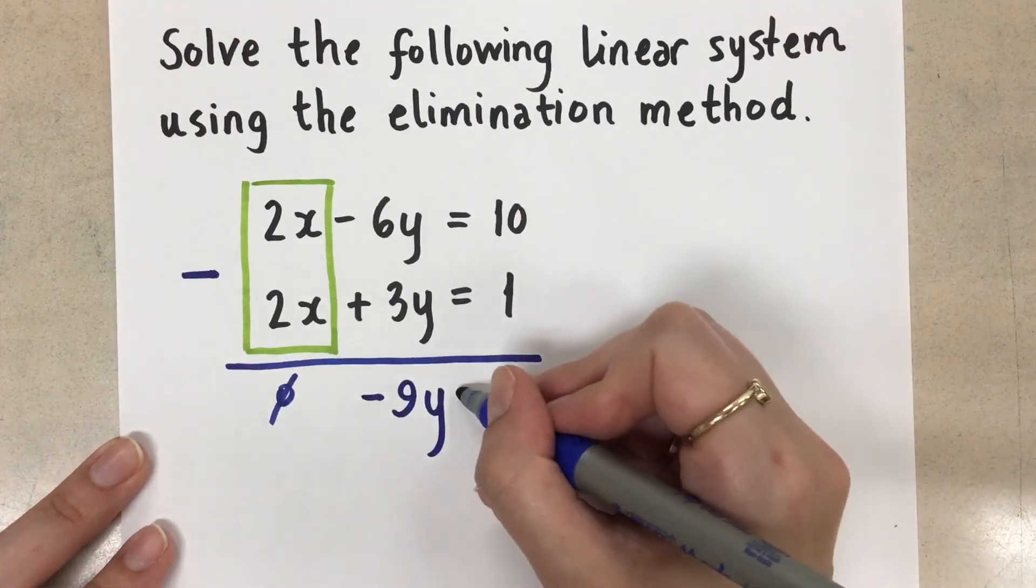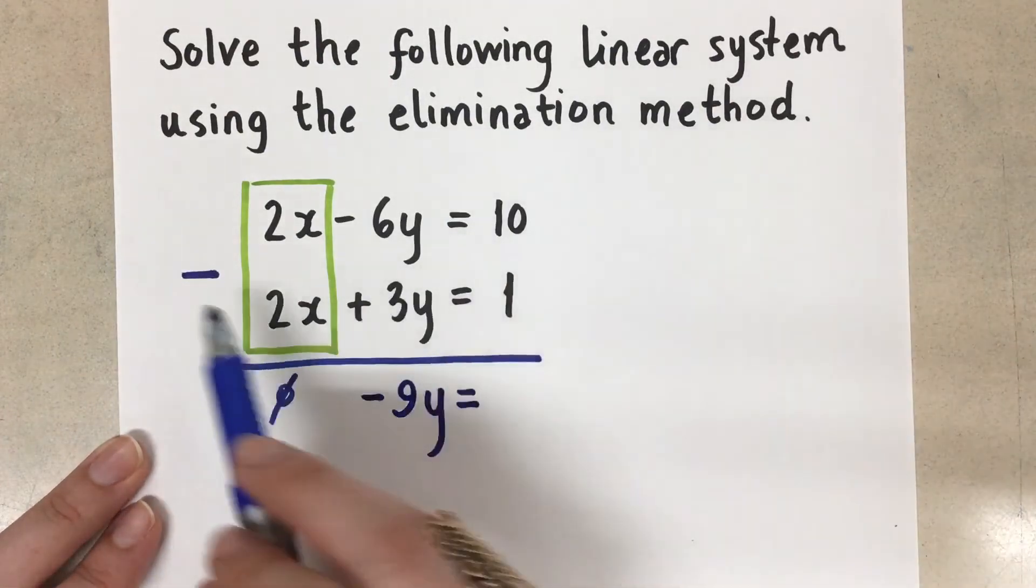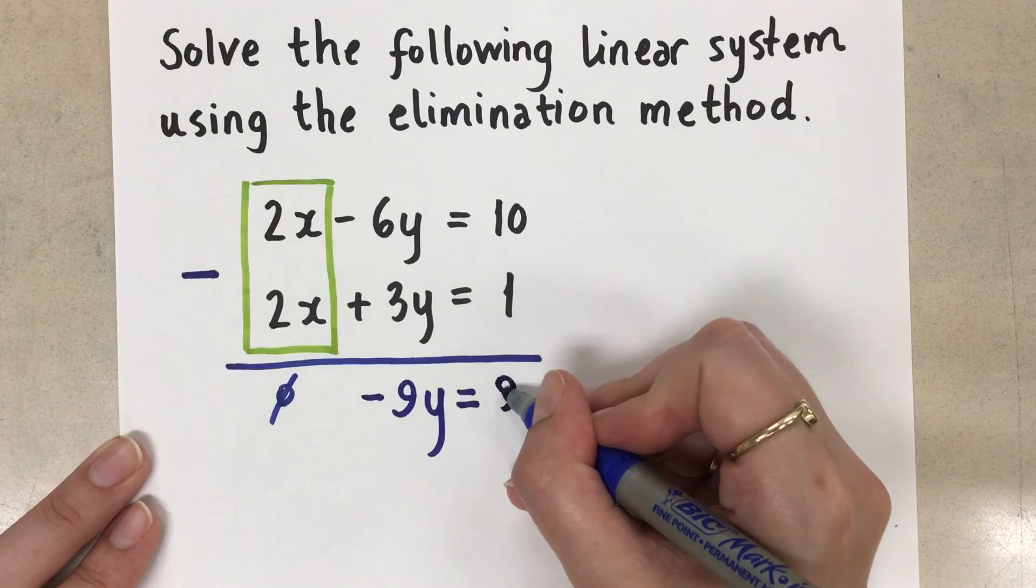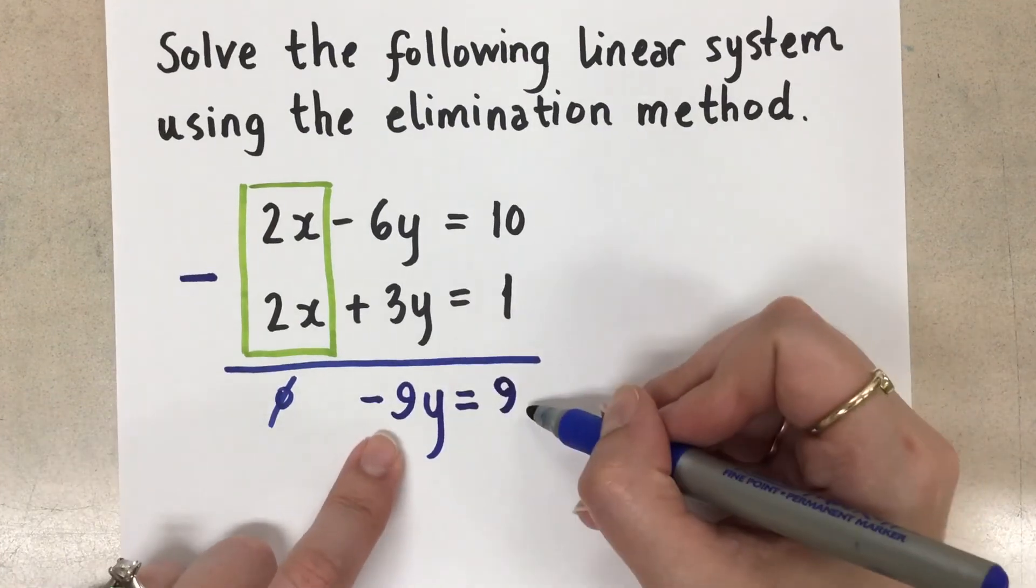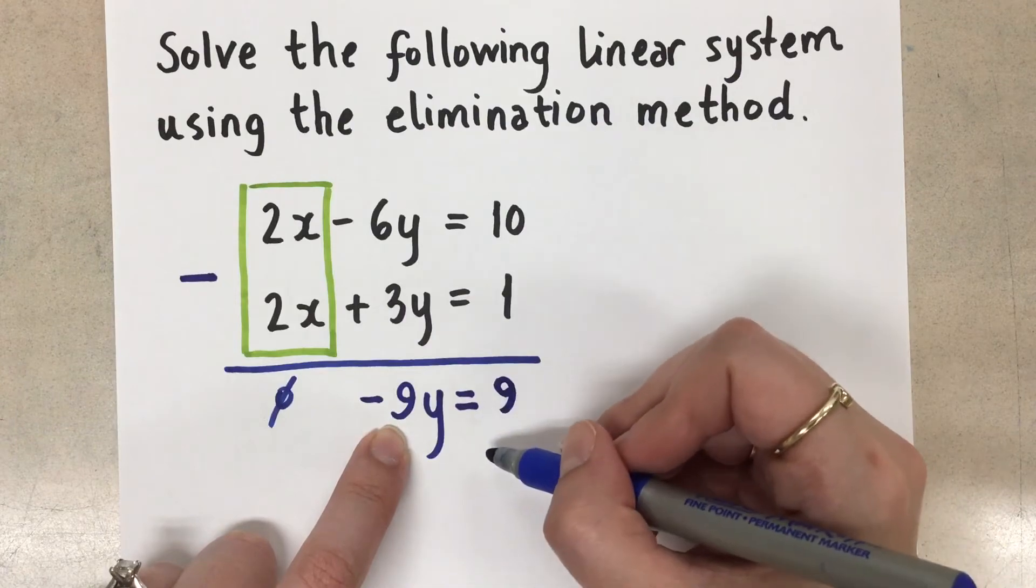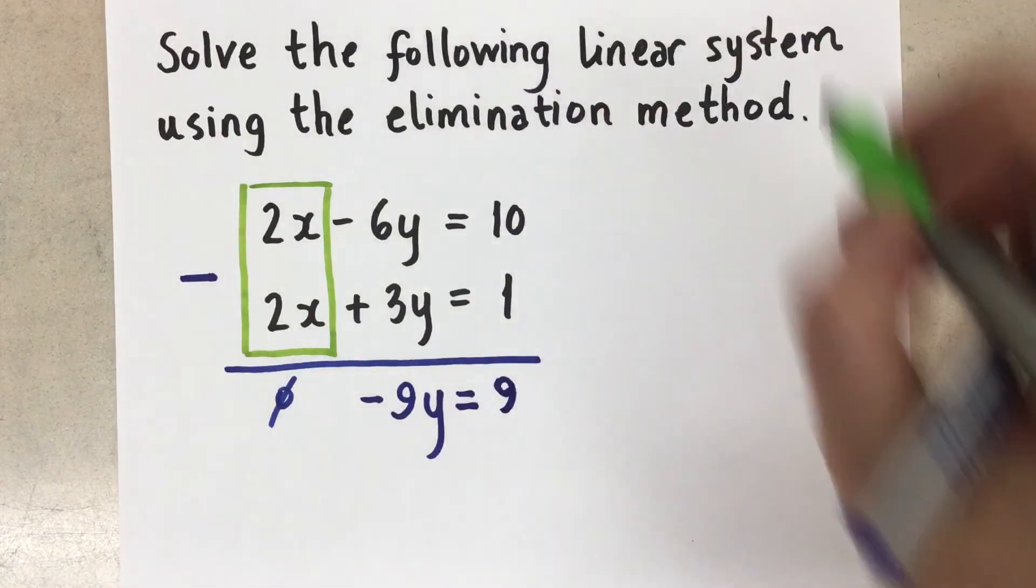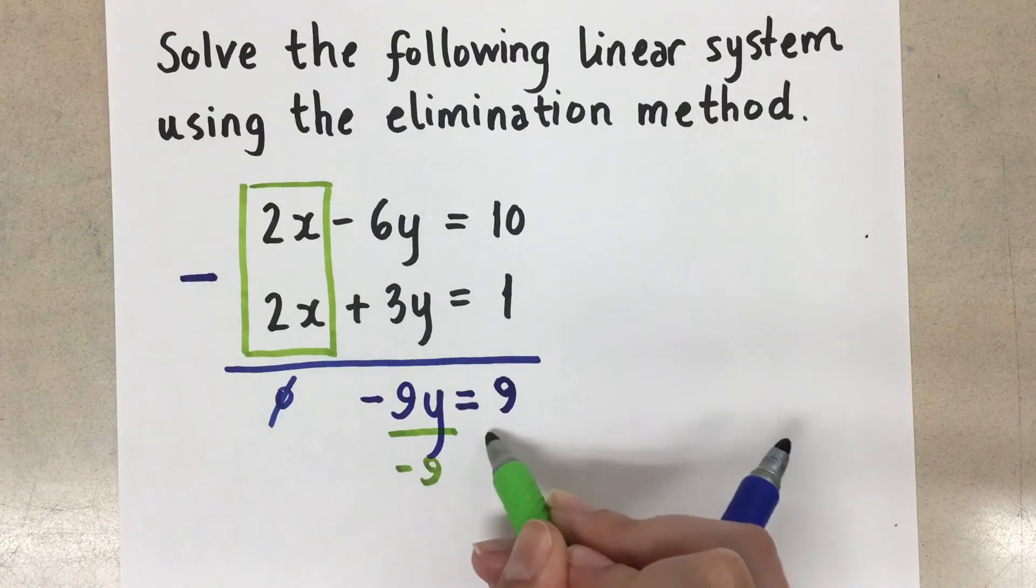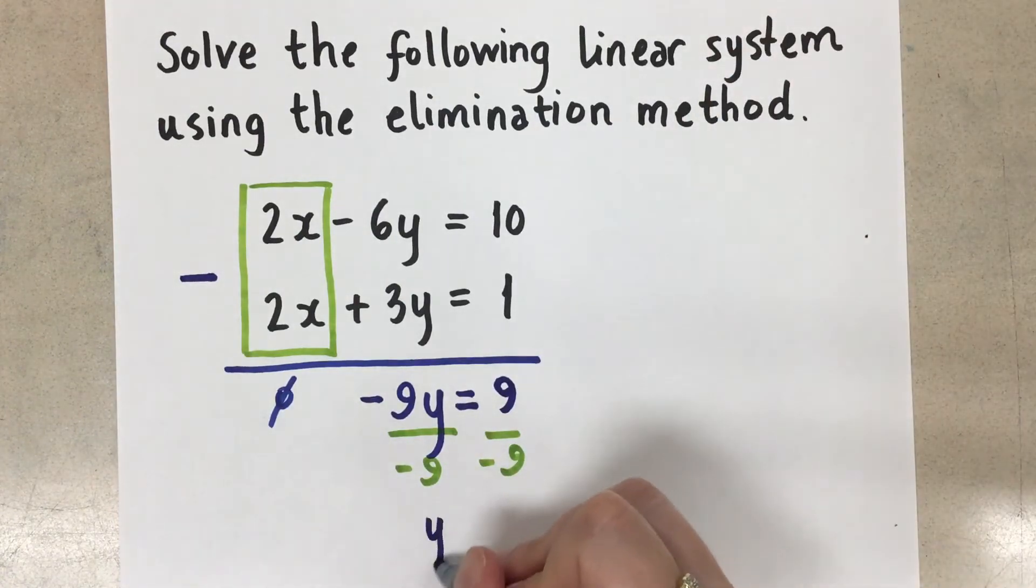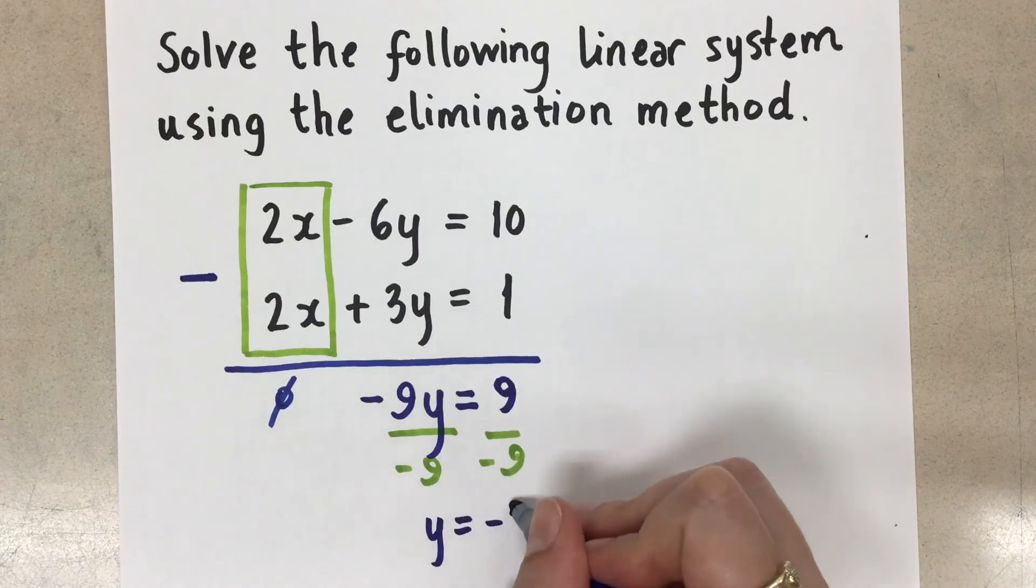Bring down that equal sign, line it up. And then 10 minus 1. And that is 9. So what we've done here is created a simple equation that now we can solve for that y term. So to solve for y here, we have to divide both sides by the negative 9. And we're left with y equals negative 1.